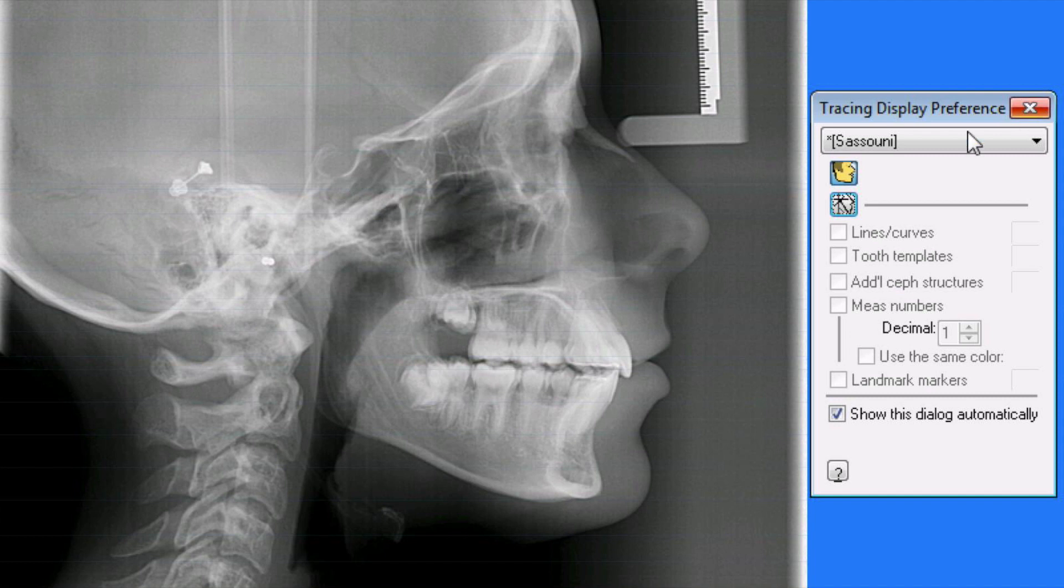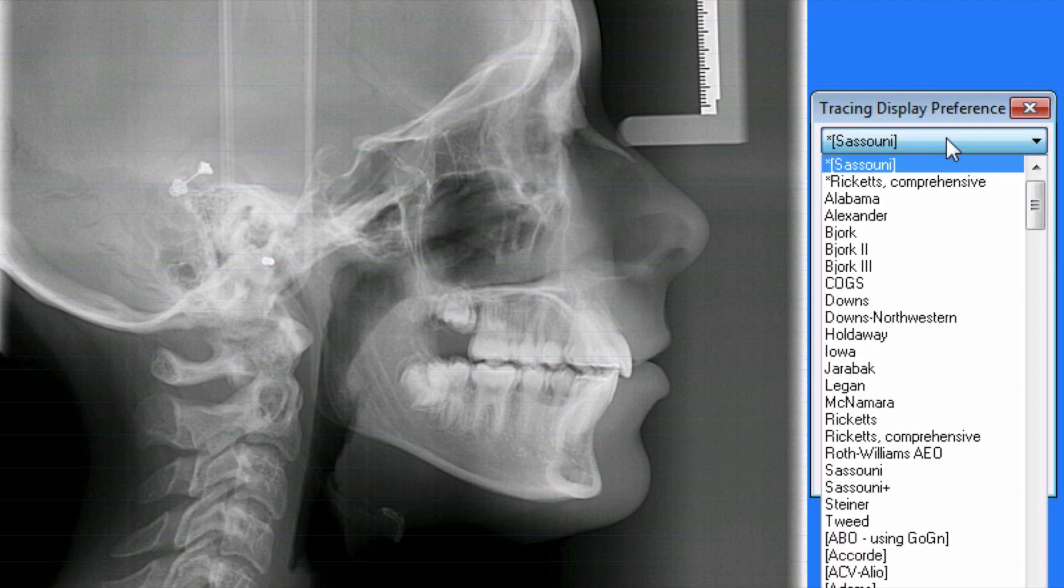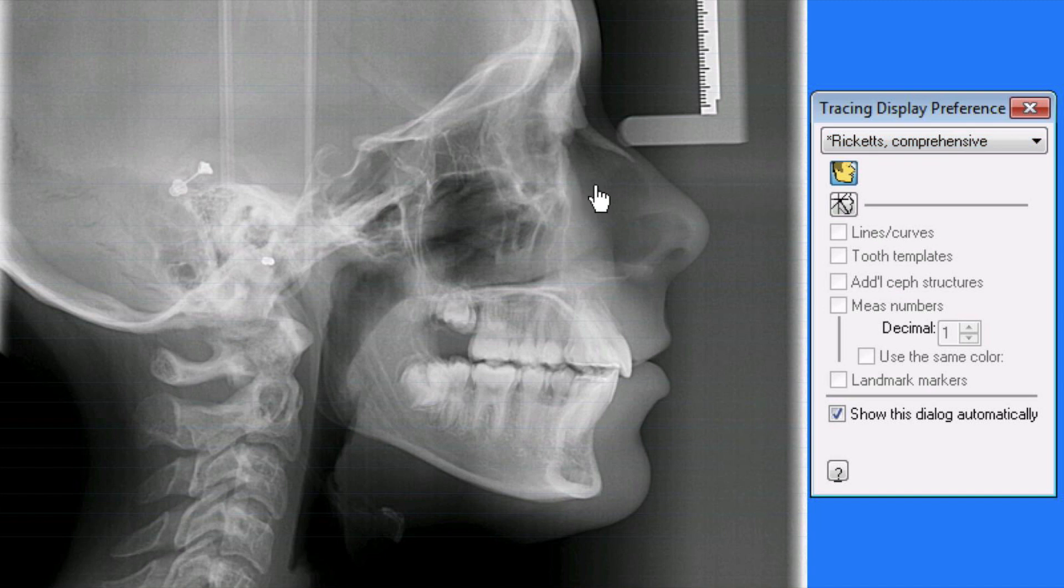This is just an example, it's Sasuni, but it could be anything, could be Ricketts or whatever analysis you pick. And then you just have to place the points. The software is going to prompt you to place the points on the landmarks.